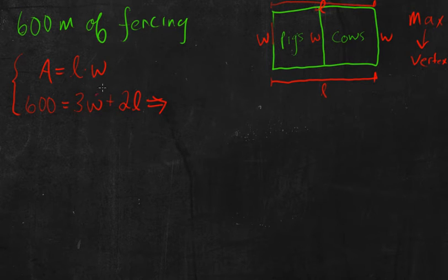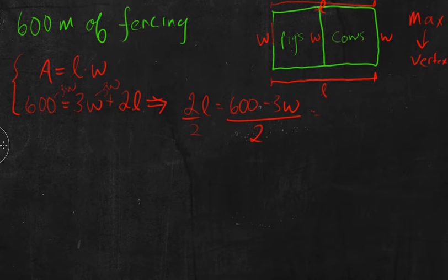So I'm going to take this second equation here and solve it for L. So the first thing I'll do is I'll get rid of this 3W, subtract it from both sides. So I end up with 2L is equal to 600 minus 3W. So I'll divide both sides by 2. And that's equal to L, and 600 divided by 2 is 300, and 3 divided by 2 is just 1.5, so 1.5W.